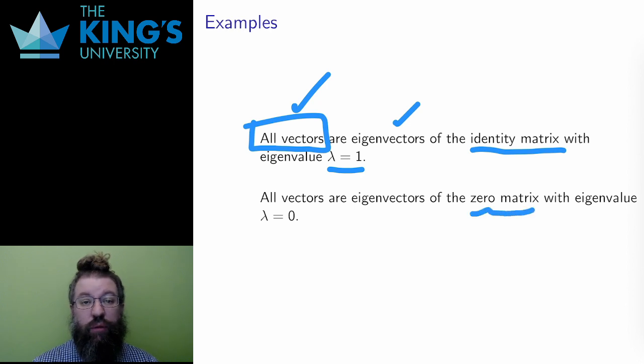Similarly, the zero matrix sends everything to 0. Everything is in the kernel of the zero matrix. Any vector you start with gets sent to 0, which is the same as 0 times the original, so every vector is an eigenvector with eigenvalue 0.